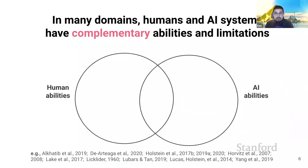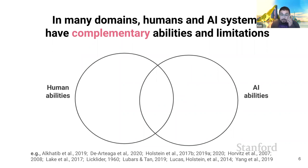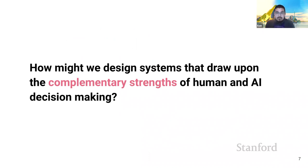A long line of literature suggests that in many domains, humans and AI systems have complementary abilities and limitations. While the gap may narrow over time, many skills and occupations, such as those involving forms of care work, may fundamentally defy automation. So to realize the benefits of AI and to mitigate its risks, it's critical that we design to take advantage of what humans do best, while also helping humans overcome their own limitations. In my research, I explore how we might design systems that draw upon the complementary strengths and try to mitigate respective biases of human and AI decision makers.